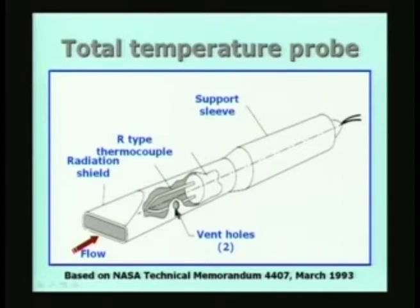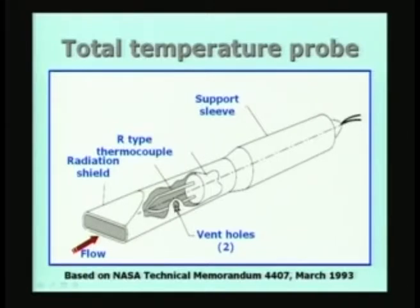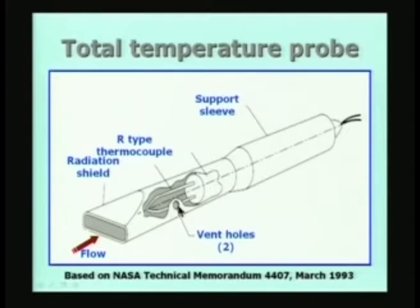Vent holes are provided on the side — two of them, one on each side 180 degrees apart. The flow enters the duct arrangement and comes to stagnation near the probe, then moves slowly out through the vent holes. The area ratio of the two vent holes to the inlet area is about 0.5 to 0.6, found to be the most desirable ratio. This means the vent holes are smaller than the inlet cross section.